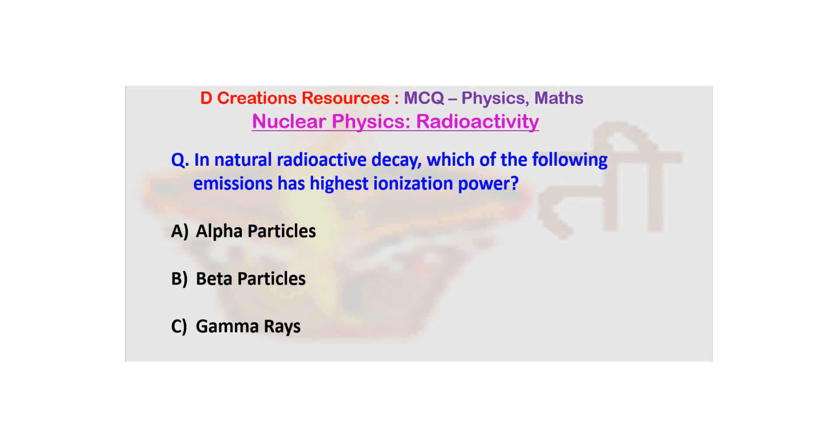Let us look at a question from Nuclear Physics and it is pertaining to radioactivity, radioactive decay especially. We have already tackled some questions about radioactivity. If you wish to see them, you can watch the previous episodes. In this particular question, we have been asked that in natural radioactive decay, which of the following emissions has highest ionization power?